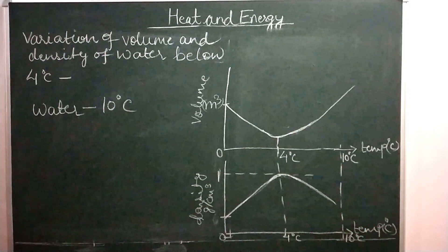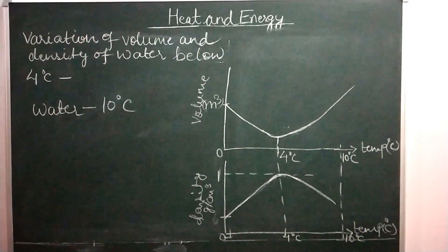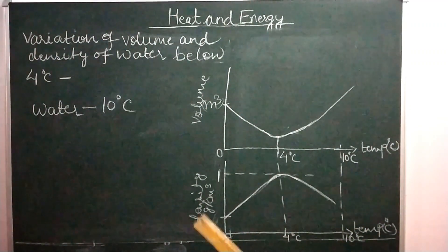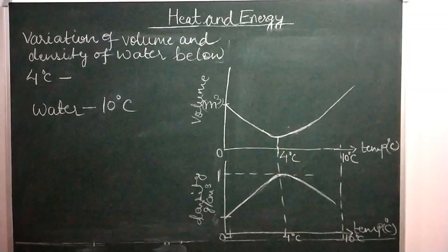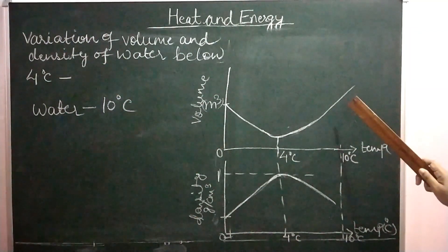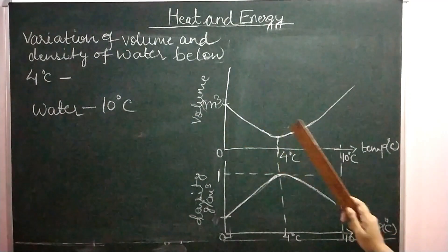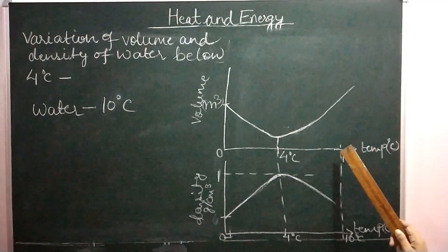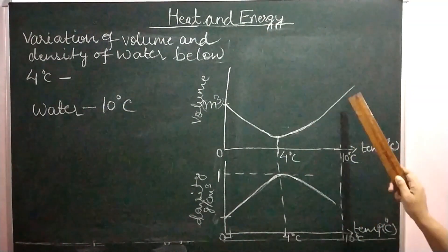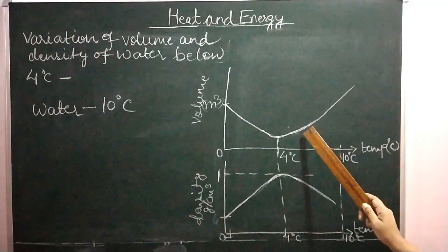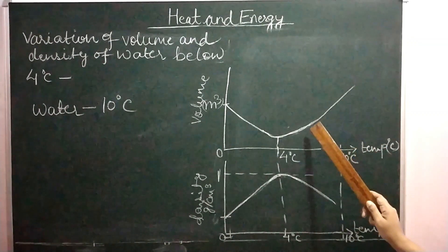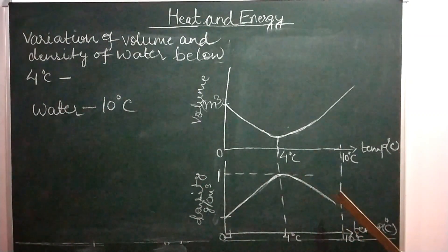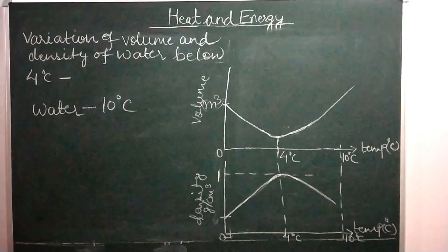The topic is the variation of volume and density of water below 4 degrees Celsius. These are two graphs. If we consider the volume-temperature graph, as the temperature of water decreases it is contracting and the density is seen to increase over this temperature range. This continues until 4 degrees Celsius, at which point the density of water is 1 gram per centimeter cube. Now if you look at the next temperature range from 4 degrees Celsius on further reducing the temperature, instead of contraction it is expansion, and the volume is increasing while density is decreasing.